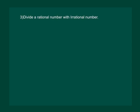Let us now see what happens if we divide a rational number with an irrational number. Let us take the same example, 3 by root 2. To divide rational by irrational, we will have to rationalize. So we get 3 times root 2 whole divided by 2, since root 2 into root 2 is equal to 2.